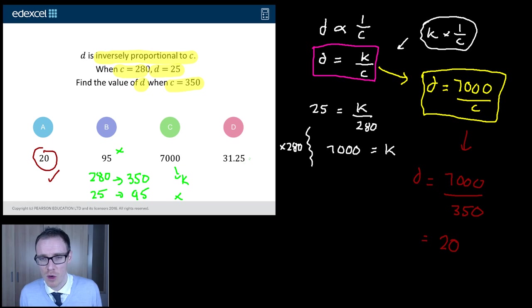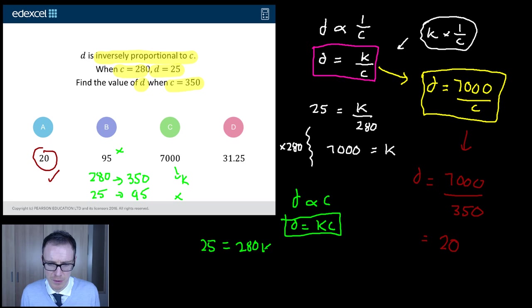What about D, 31.25? Well this is an interesting one. Imagine this question was a direct proportion question. Feel free to pause the video because what I'm going to ask you to do is solve this if it says D is directly proportional to C. So let's do it. If D is directly proportional to C, we'd get D is equal to K times C. We don't know what K is yet. Put me a little box around that. Now we use our information. When C is 280, D is 25. So we get 25 is equal to 280 times by K.